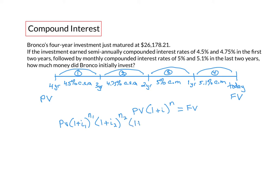Times 1 plus the periodic interest rate in time interval 3 to the number of compounding periods in time interval 3, times 1 plus the periodic interest rate in time interval 4 to the number of compounding periods in time interval 4. That will equal the future value.